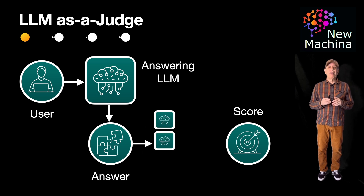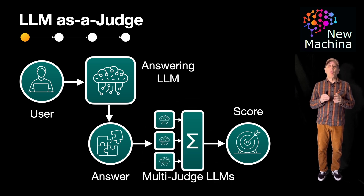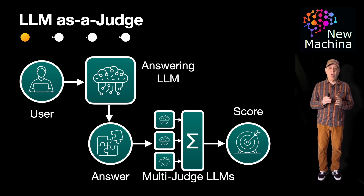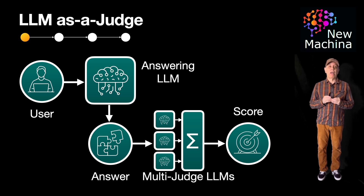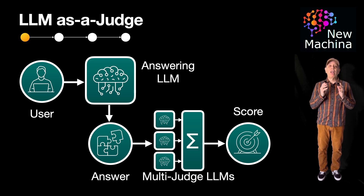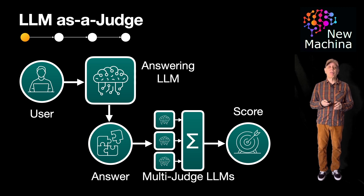Next, in the second architectural option, we have a multi-LLM panel for judging answers. In this approach, multiple LLMs act as judges and their votes are aggregated. This reduces bias and adds robustness. Think of this like a group of LLMs on a panel deciding together.